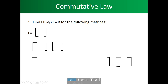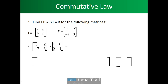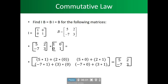We want to find B times I. We have the identity matrix and the B matrix, and we're going to multiply them. We do 5 times 1, 2 times 0, and keep going across — and we get 5, 2, minus 7, and 3. This confirms that B times I equals B.